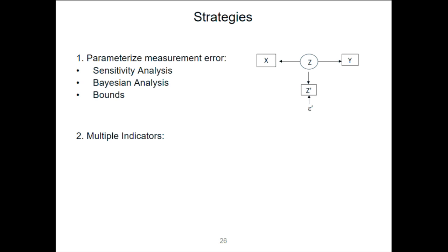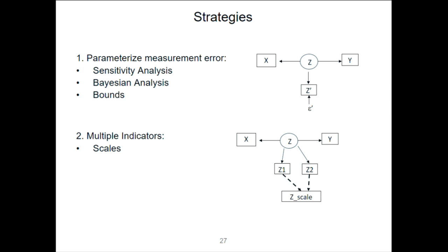All those are feasible strategies. Another strategy to get around the whole thing completely is to have multiple measures, in which case those two measures have independent noise. If I have two measures of Z — Z1 and Z2 — both of which have noise, but the noise affecting Z1 and the noise affecting Z2 are independent of each other, then I actually can do what I want.